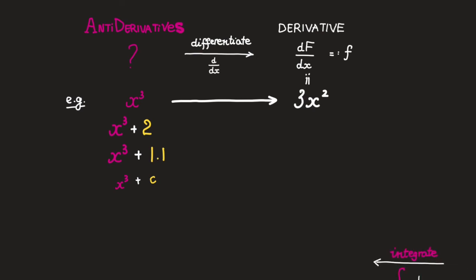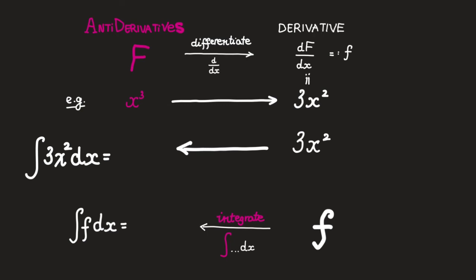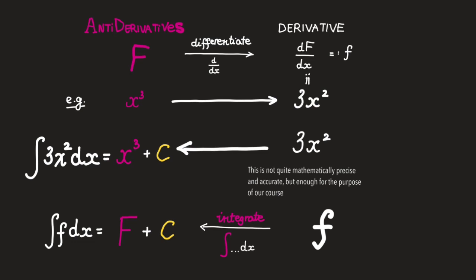This now clarifies for us what indefinite integration gives us. When we differentiate a function, what we get is its derivative. Going in the other direction, when we integrate a function, what we get are all of its antiderivatives. Here, note the emphasis on the word all, right? We don't just get a single antiderivative, we get all of them, infinitely many of them.